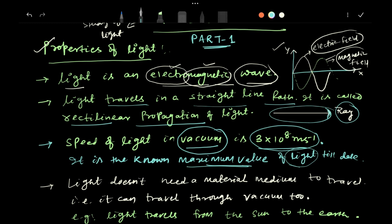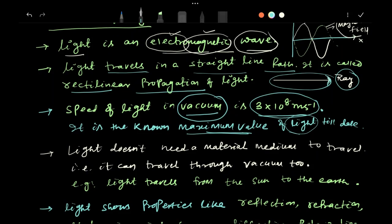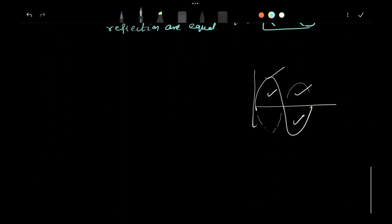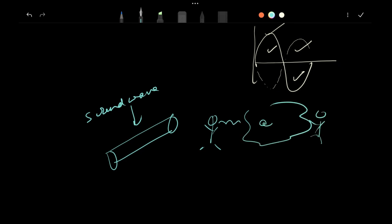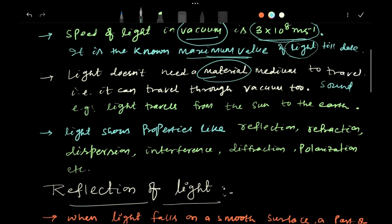Next property: light does not need a material medium. When I am saying material medium, that means if I am going to talk about sound, which you read in class 9th, sound wave needs an object. For example, I am in a room, I am talking and you are here, you are listening. In between there is air, so sound needs a medium to propagate. But in case of light, light does not need any kind of medium to propagate. The best example is light is traveling from the sun to the earth, and between sun and the earth you are getting only space or vacuum.